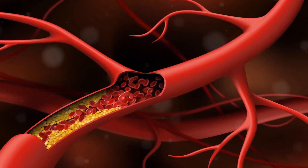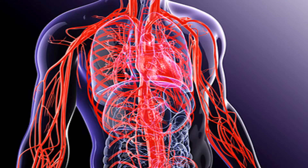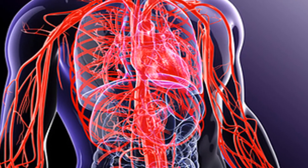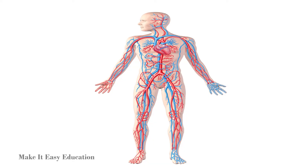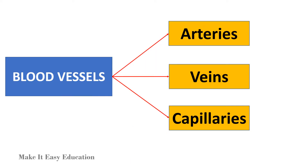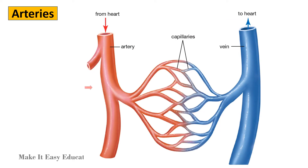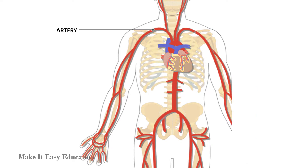Blood vessels are thin muscular tubes that carry blood throughout our body, forming a network so that blood can be transported to all parts of the body. Blood vessels are of three types: arteries, veins, and capillaries. Arteries are the largest of the three blood vessels; they carry blood containing oxygen from the heart to different parts of the body.